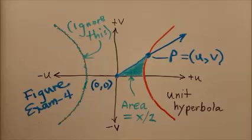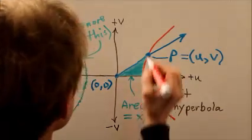Unit hyperbola—what is the equation of the unit hyperbola? Well, that equation works out to be u squared minus v squared equals one.